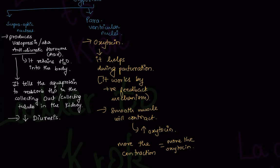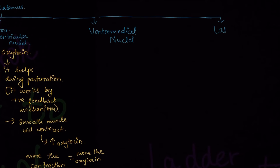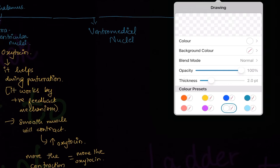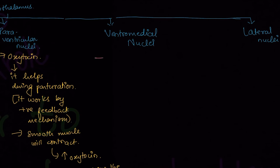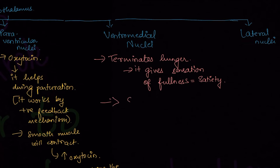The third nucleus is the ventromedial nucleus. It is responsible for terminating hunger and giving a sensation of fullness, described by the word satiety. Along with termination of hunger, it also controls sexual desire and thermoregulation — the hypothalamus is responsible for thermoregulation, and specifically it is the ventromedial nucleus.